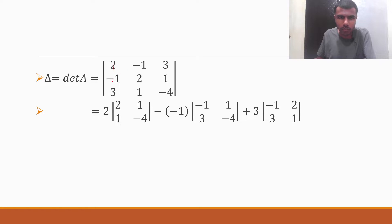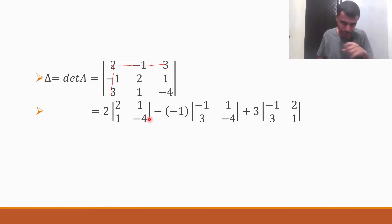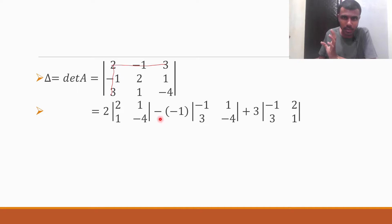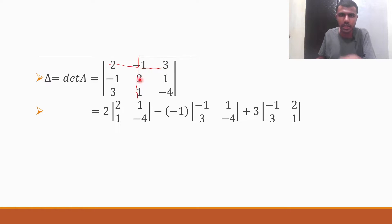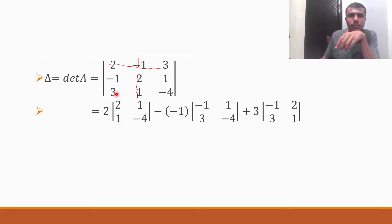Cut off the row and column in which 2 is there, so what I'm left with is the determinant of 2, 1, 1, minus 4. This minus is fixed — it's apart. What is the second element? Minus 1. So minus 1 into: cut off the row and column in which minus 1 is there, giving the determinant of minus 1, 1, 3, minus 4.